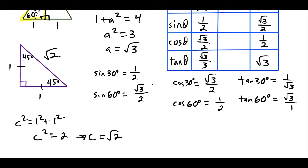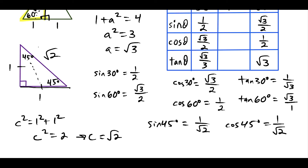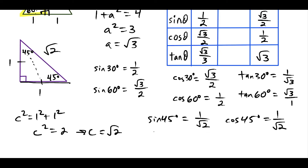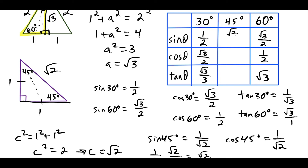Now we fill out the 45-degree column. Sine of 45 degrees equals the side opposite 45, which is 1, over the hypotenuse, which is square root 2. For cosine of 45, the side adjacent is also 1 over square root 2. Rationalizing by multiplying by square root 2 over square root 2 gives square root 2 over 2, which is the more common form for both sine and cosine of 45.